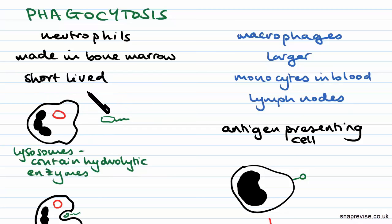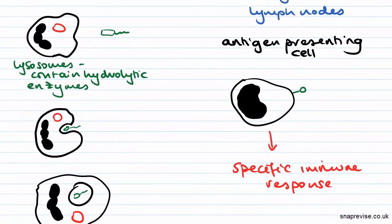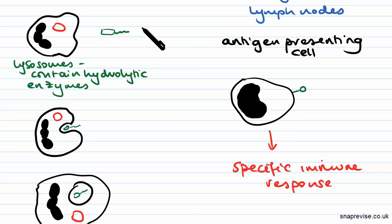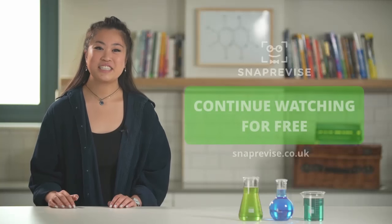Neutrophils travel in the blood, and as seen in the process of inflammation, they can squeeze out of capillaries into the tissue fluid and into infected areas. The way they engulf pathogens is through the use of lysosomes. The neutrophil, which has a multi-lobed nucleus — which is how you can identify them — sees a pathogen, starts to surround it, and eventually fuses to form an intracellular vesicle containing the pathogen.